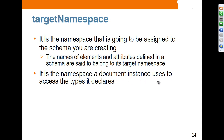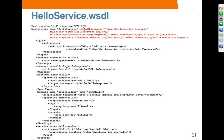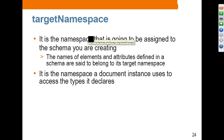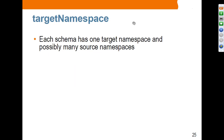It is the namespace a document instance uses to access the types it declares. Source namespaces provide the namespace these elements that you are using belong to. When you are creating an XML schema for a particular namespace, that is the target namespace that needs to be defined. Each schema has one target namespace and possibly many source namespaces.